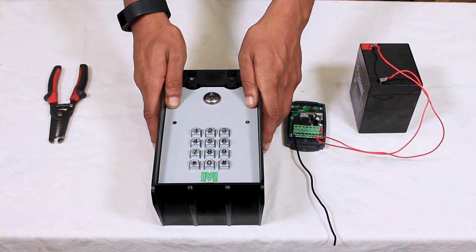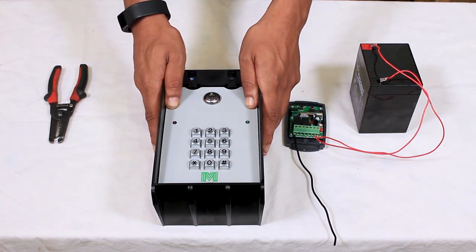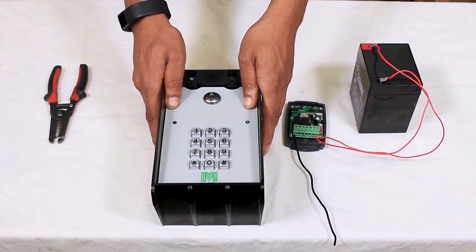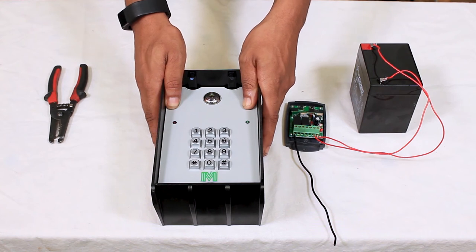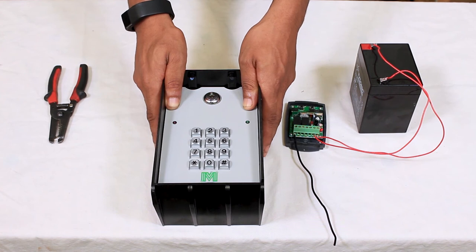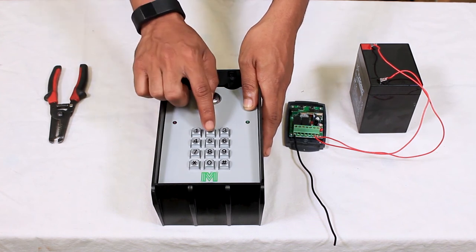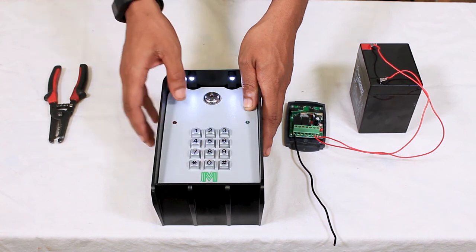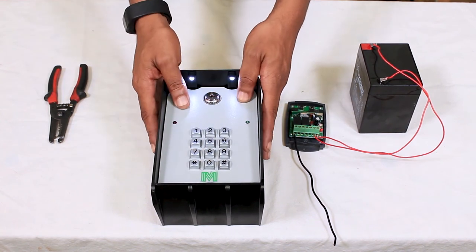Just to give you an example of how to program this keypad, we're going to use the factory sample master code from the manual and the factory sample entry code from the manual. This consistent beep that you're hearing means that we need to enter a master code. So we're going to do that, which is 2580. We got the two indicators so we know it took the master code.